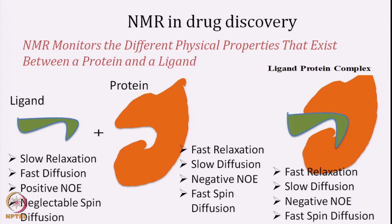It is all about protein-drug or protein-ligand interaction. Protein is the bigger molecule, ligand is the smaller molecule. How can we understand if this ligand interacts with a protein, and suppose we are given a soup of ligands — which ligand will interact with a protein so that we can take it, optimize it, and make a better efficacy drug? NMR can monitor different physical properties that can exist between a protein and a ligand, and that can be used for finding a better optimized ligand in a drug discovery protocol.